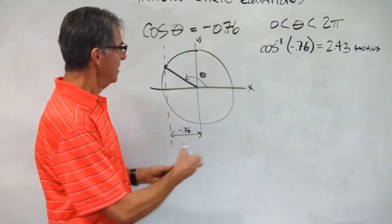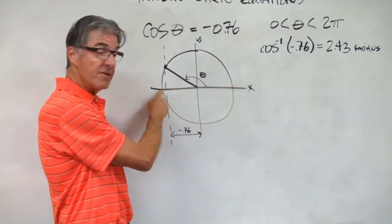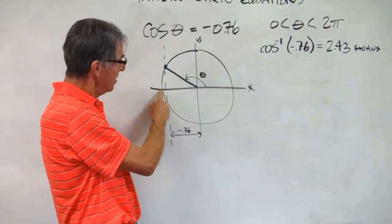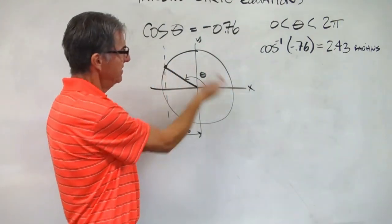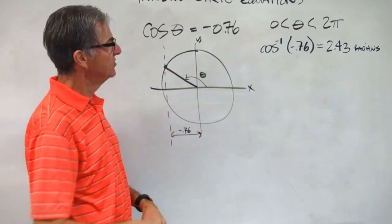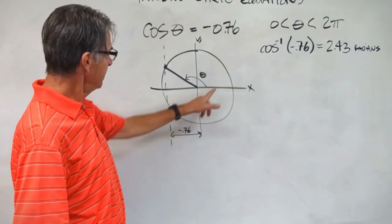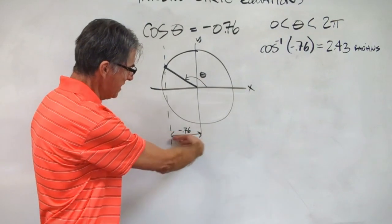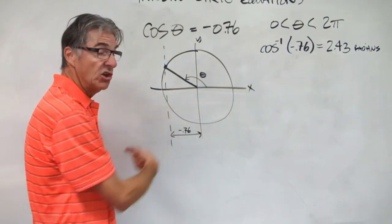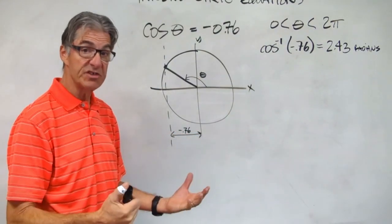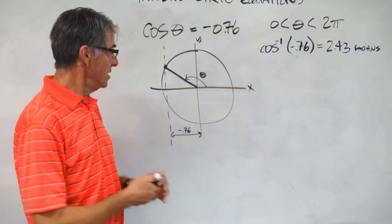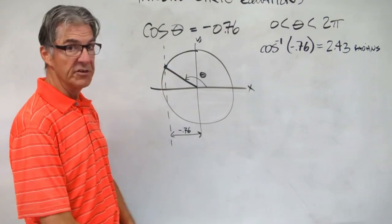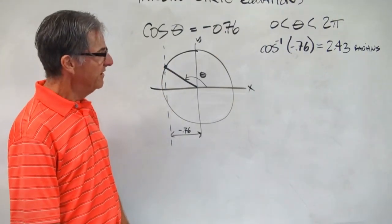Remember, it's pi radians to get all the way halfway around, and pi is 3.14, so 2.43 is less than that — it's going to put us in the second quadrant. Here's our theta, and this is negative 0.76 along the x-axis. Remember, the cosine value is the x-coordinate of the point on the unit circle.